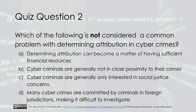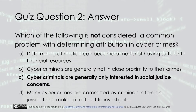Quiz question two: Which of the following is not considered a common problem with determining attribution in cybercrimes? A) Determining attribution can become a matter of having sufficient financial resources. B) Cybercriminals are generally not in close proximity to their crimes. C) Cybercriminals are generally only interested in social justice concerns. D) Many cybercrimes are committed by criminals in foreign jurisdictions, making it difficult to investigate. The answer is C: cybercriminals are generally only interested in social justice concerns.